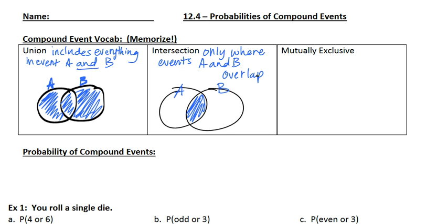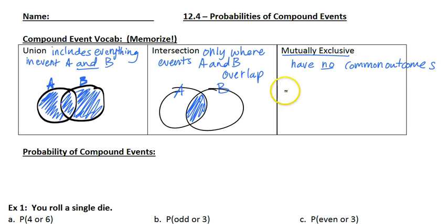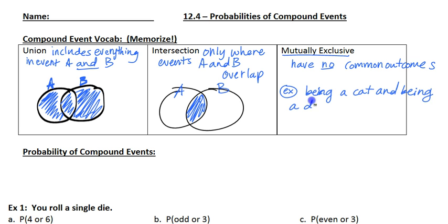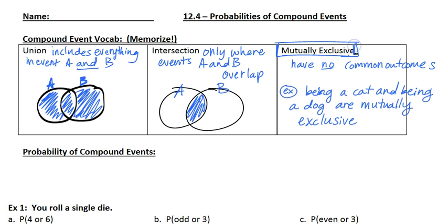And then there's something else called mutually exclusive. Mutually exclusive is something that has no common outcomes. What I mean is, if you are one thing, you cannot be the other. So for example, being a cat and being a dog are mutually exclusive. It is not possible for an animal to be a dog and a cat at the same time. So they are mutually exclusive — they have no common outcomes. Keep these vocabulary in mind. Mutually exclusive is the one that we're going to really focus on, and that will be on your chapter 12 test as a vocabulary word.